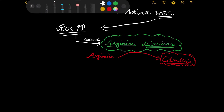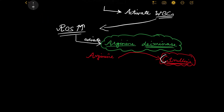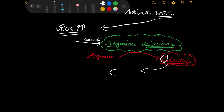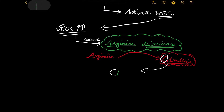What citrulline will do — citrulline starts with C — it will lead to C for chromatin decondensation, not condensation, but decondensation. So citrulline leads to chromatin decondensation.